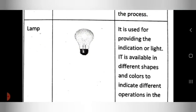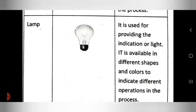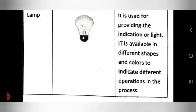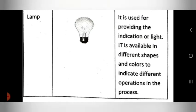The next output device is the lamp. You already see this in daily life. The function is that it is used for providing indication or light indication. It is available in different shapes and colors to indicate different operations in the process.